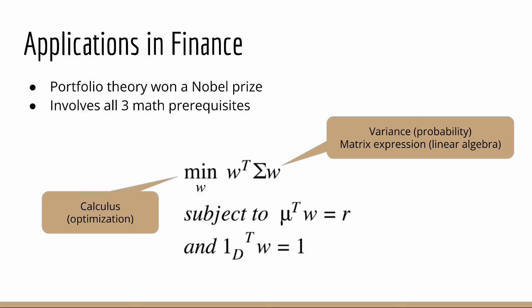This, again, involves all three math prerequisites. The objective is actually the portfolio variance, and variance is a concept from probability. But as you can see, this expression is a matrix expression, so we need to understand linear algebra. Furthermore, since this is an optimization problem, we also need calculus, or specifically matrix calculus, since we're optimizing a matrix expression.